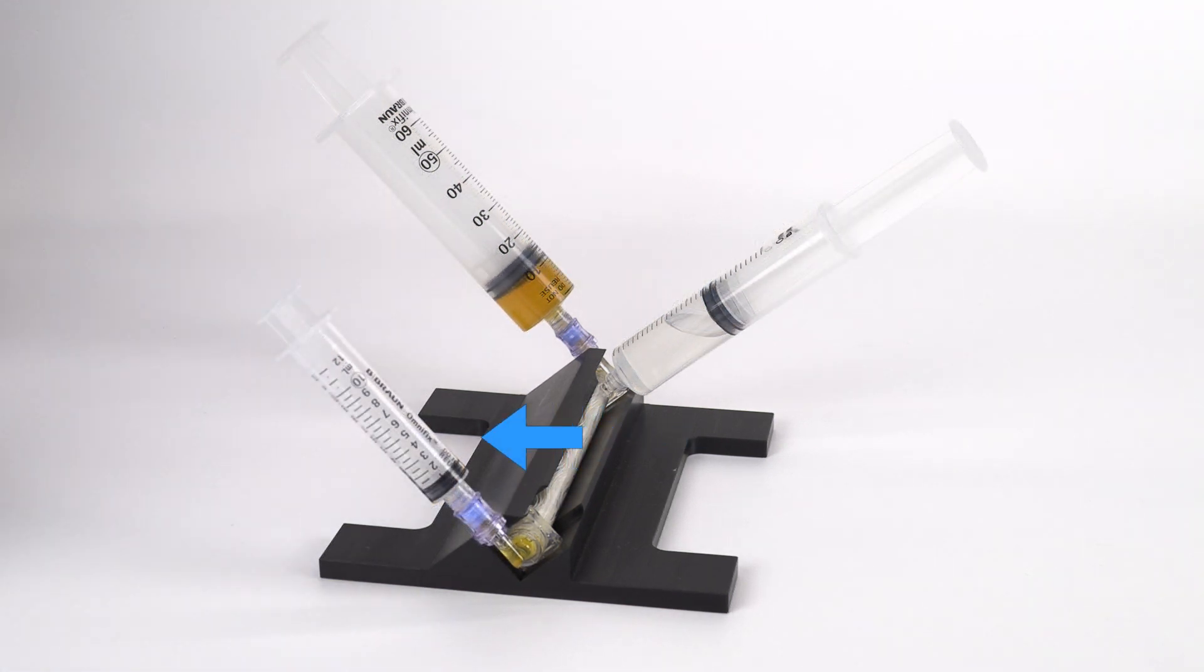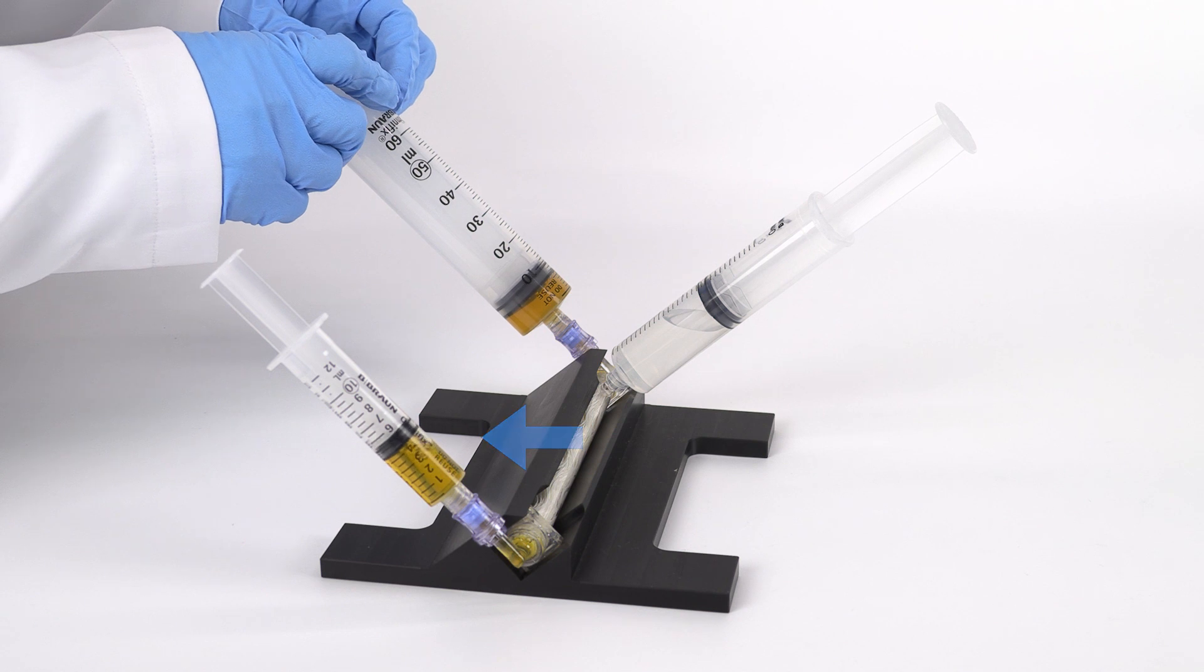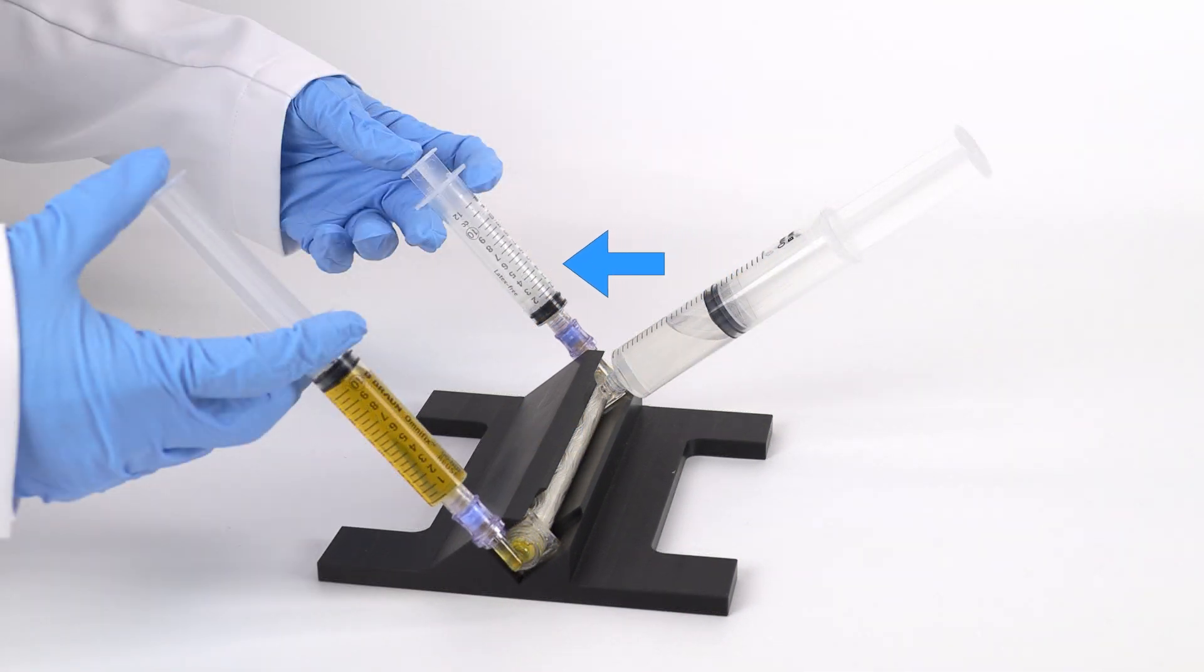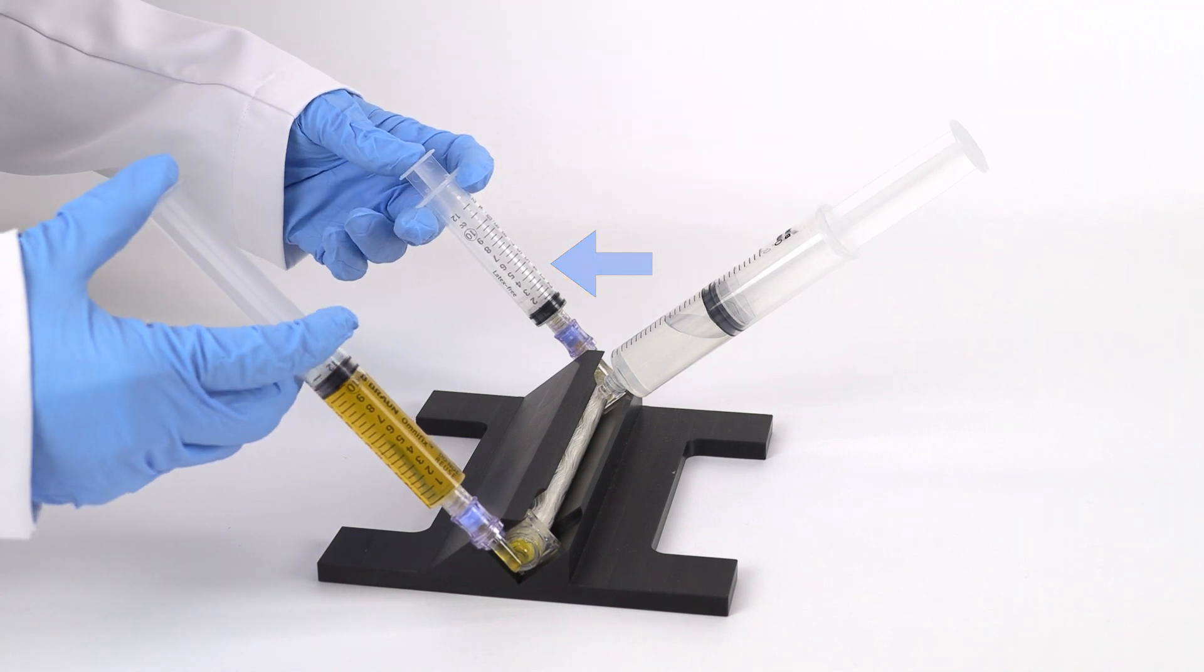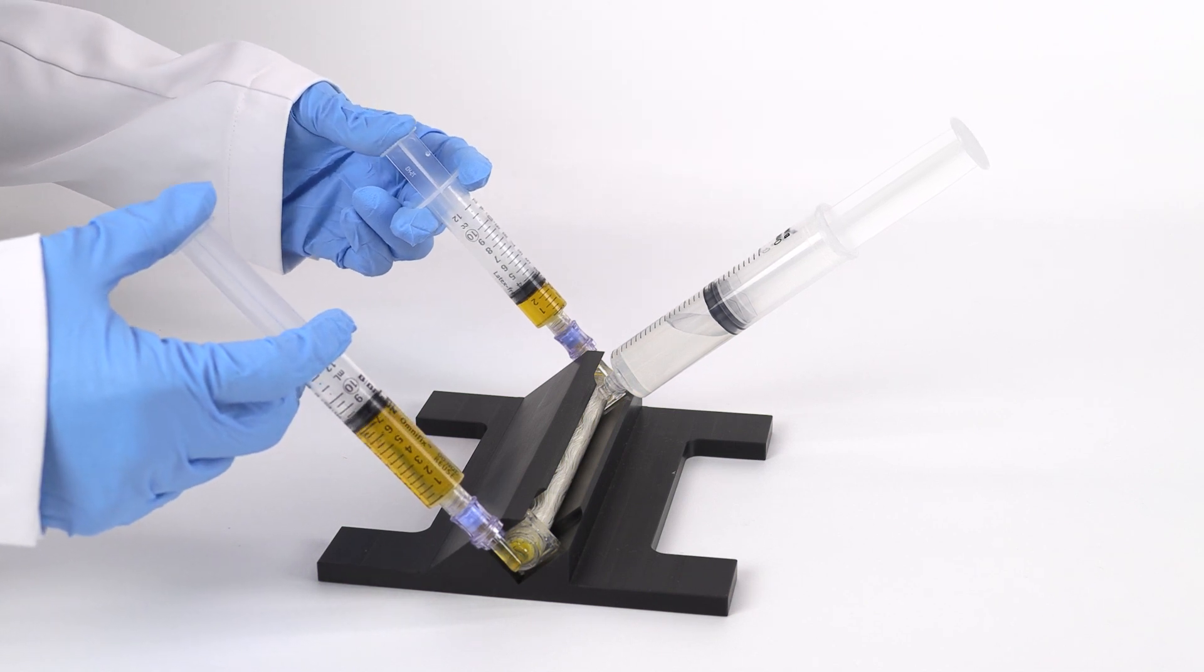Replace the empty syringe with a 12 milliliter syringe. Inject the plasma into the 12 milliliter syringe. Replace the second empty syringe with a 12 milliliter syringe. Continue the filtration process by injecting the plasma back and forth through the 12 milliliter syringes.